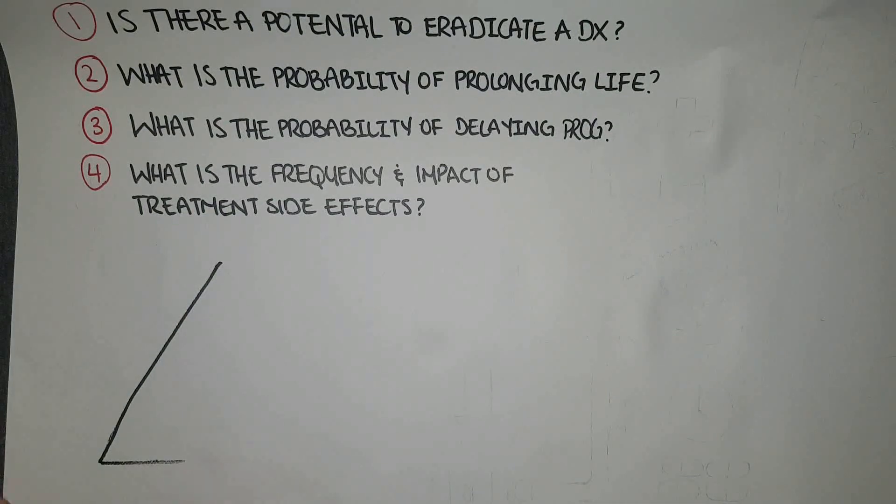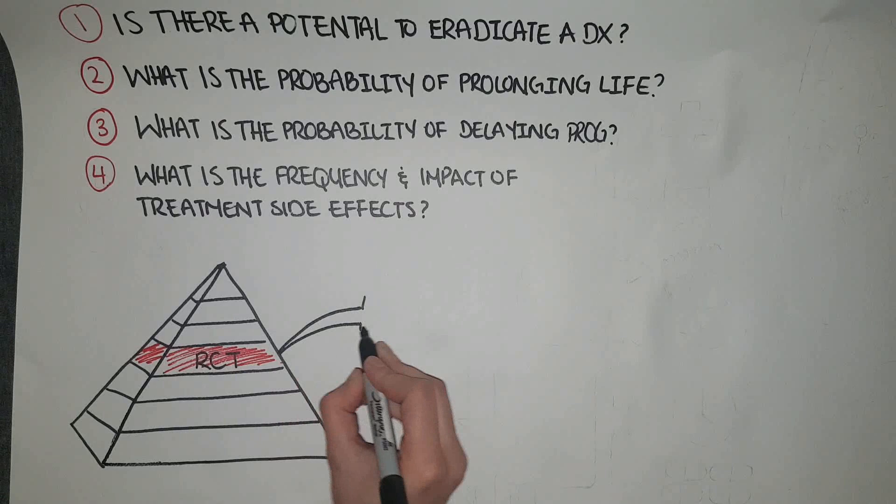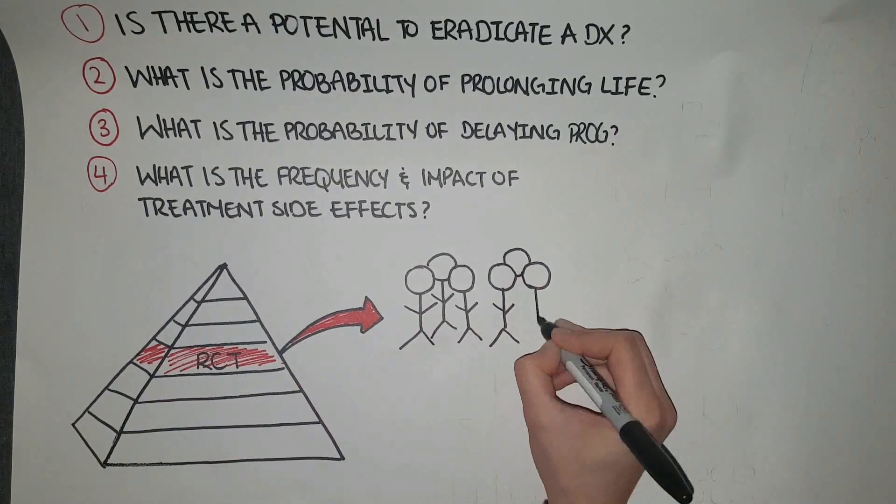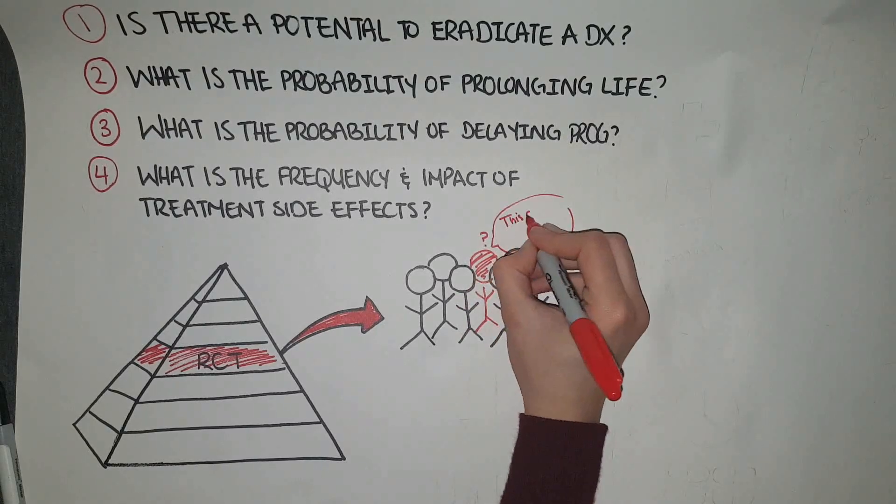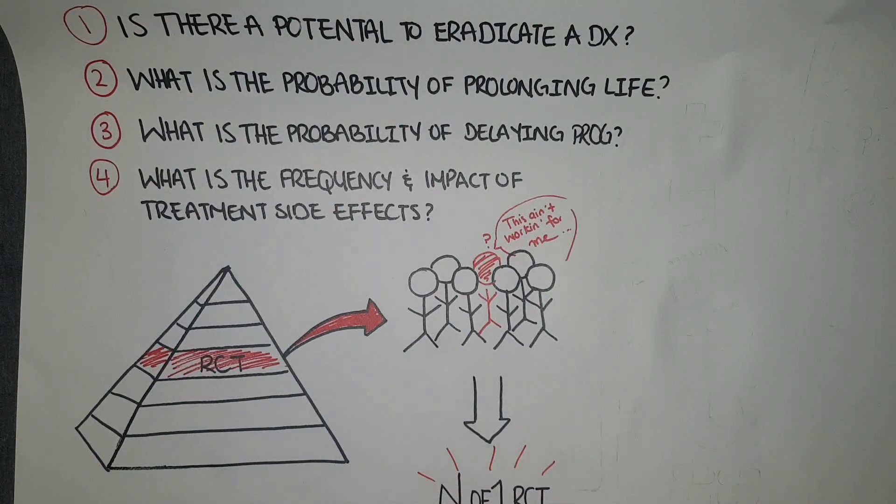Clinicians are well accustomed to making initial therapeutic recommendations based on the outcomes of randomized controlled trials involving large groups of patients. But a particular patient will not necessarily behave and respond the same as the masses. Enter N-of-1 randomized controlled trials.